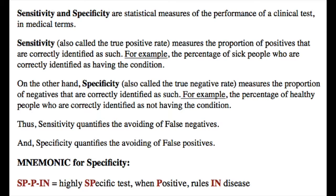On the other hand, specificity, also called the true negative rate, measures the proportion of negatives that are correctly identified as such. For example, the percentage of healthy people who are correctly identified as not having the condition. Thus sensitivity quantifies the avoiding of false negatives, and specificity quantifies the avoiding of false positives.